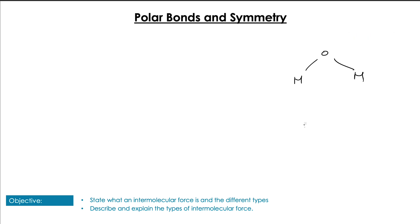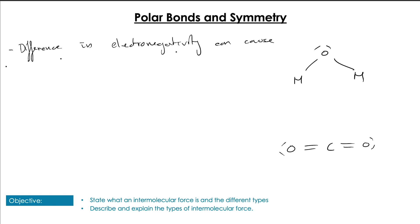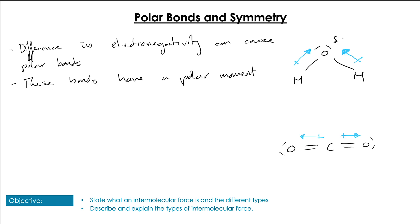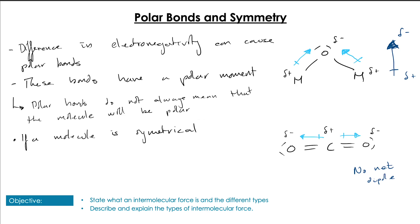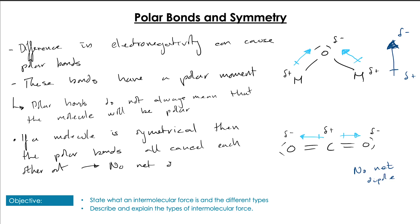To understand the other types of intermolecular force, we need to understand how polar molecules are formed — specifically how polar bonds and symmetry interact. We already know that differences in electronegativity cause polar bonds, where electrons shift toward one atom in a covalent bond. However, just because polar bonds exist doesn't mean the overall molecule is polar. For that, the molecule must be asymmetrical so that the polar moments don't cancel. Water has an overall net dipole, but CO2 does not — its polar bonds are equal and opposite and cancel out.